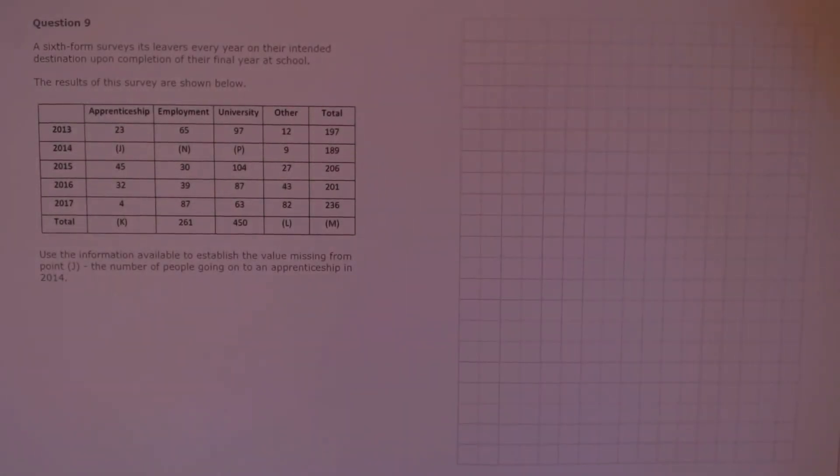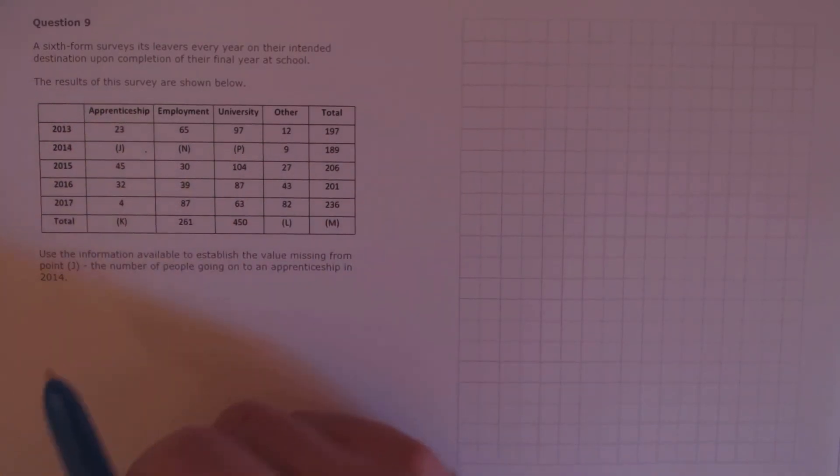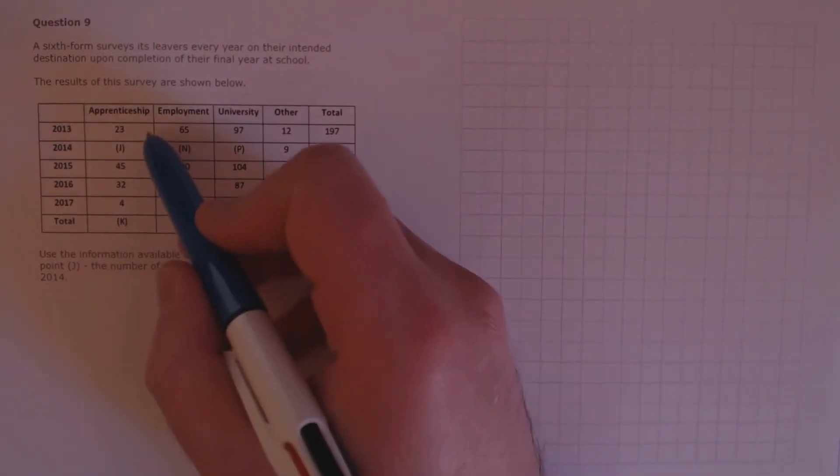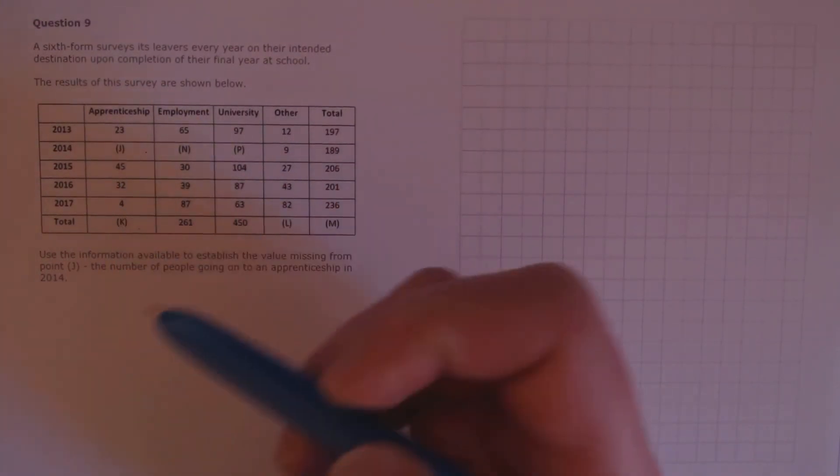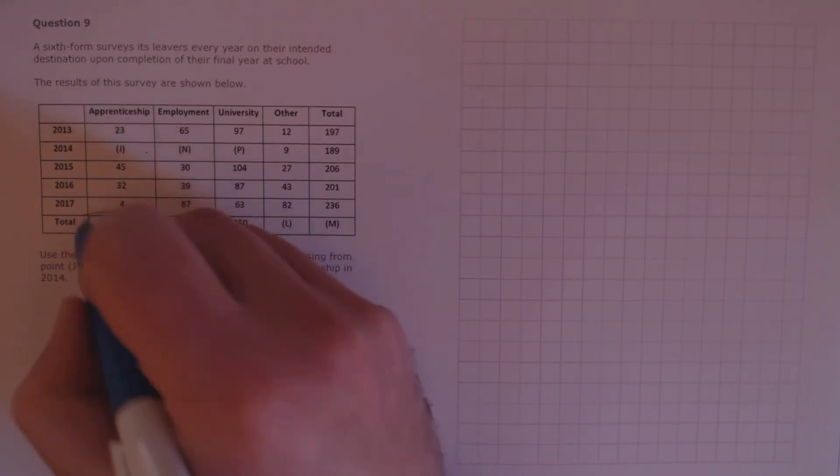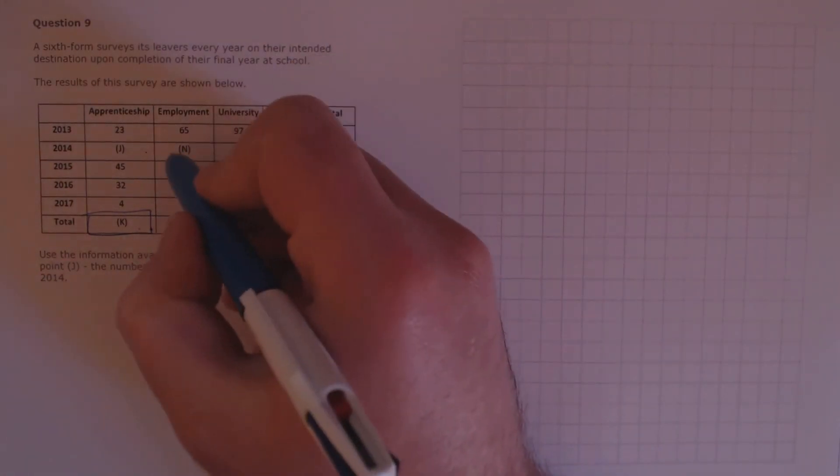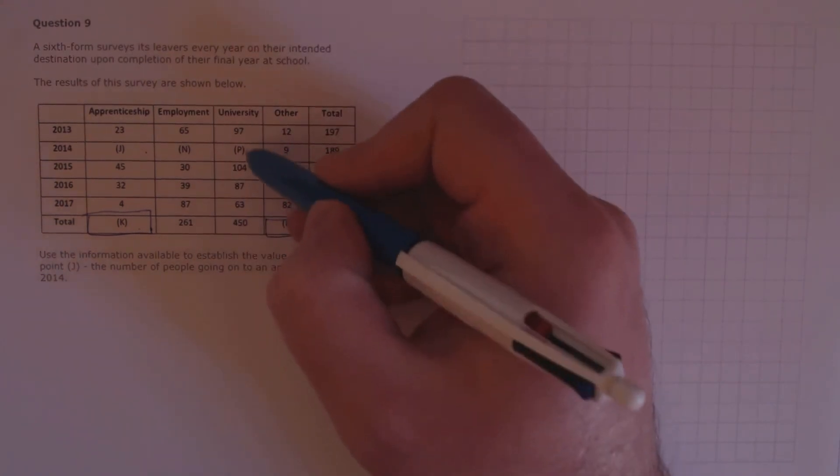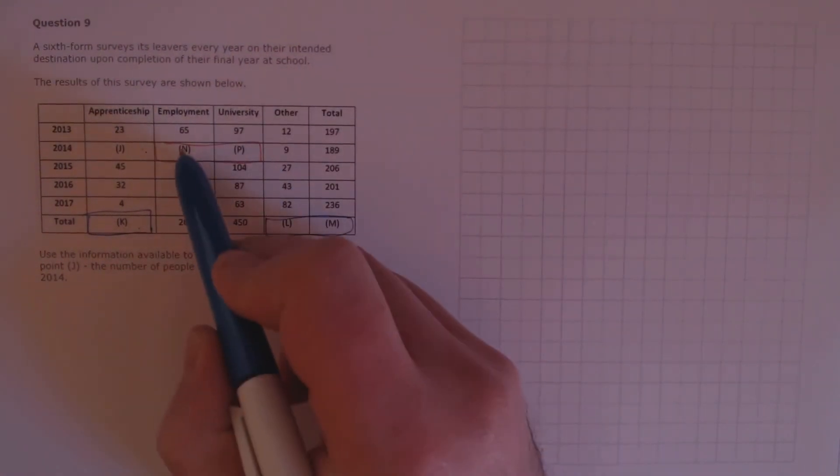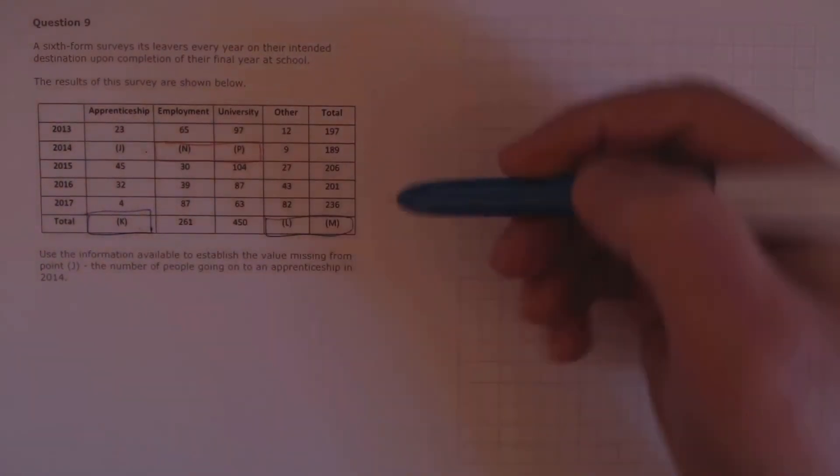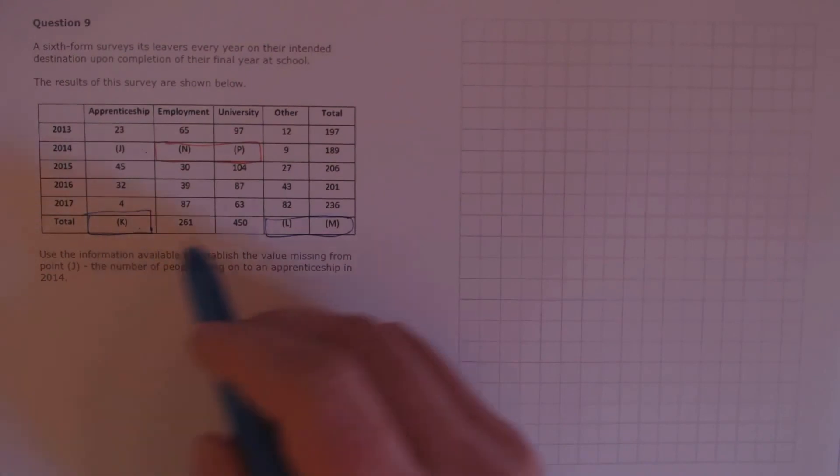Question 9. A sixth form surveys its leavers every year on their intended destination upon completion of their final year at school. The results of this survey are shown below. Use the information available to establish the value missing from point J, the number of people going on to an apprenticeship in 2014. J is missing, and there's a few ways to calculate this one. If we knew K, we could calculate J, because this is the total, we'd just have to take away the rest of these values. However, to figure out K, we know that we need to figure out L and M first. That's three things we need to work out. Alternatively, we could work out N by taking away these other values from the total, and P in the same way, and then subtract those and 9 from the total here to calculate J. Since the red box requires us to make two calculations and this requires three, we'll do the red box.